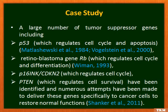Let's take a case study to understand this further. A large number of tumor suppressor genes including p53, the retinoblastoma gene (Rb), and several others have been identified, and numerous attempts have been made to deliver these genes specifically to cancer cells to restore normal functions.